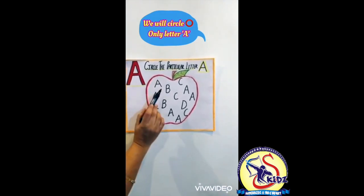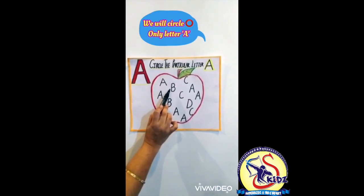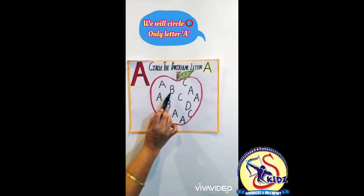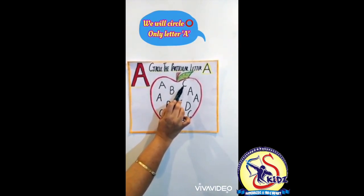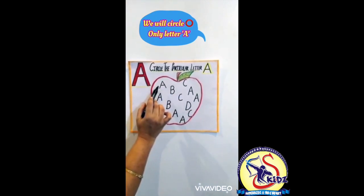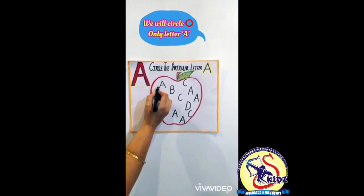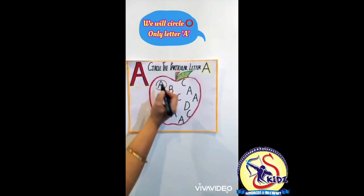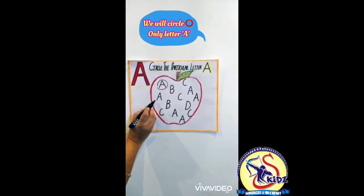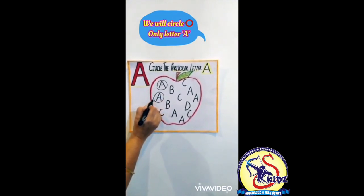Now which letter is this? Is this letter A? No. Is this letter A? No. Is this letter A? Yes. Let's circle it. Now is this letter A? Yes. Let's circle it.